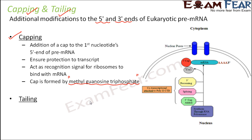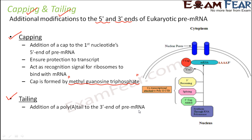Next is tailing, which is the addition of a poly-A tail to the 3' end of the pre-mRNA. The newly formed mRNA has two free ends — the 5' end and the 3' end. On the 5' end we add the cap, and on the 3' end we add a tail.